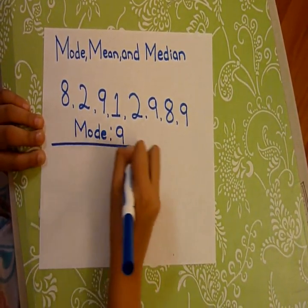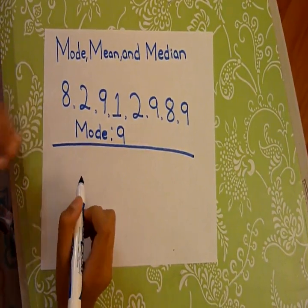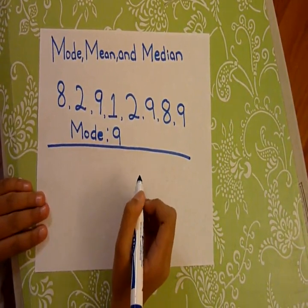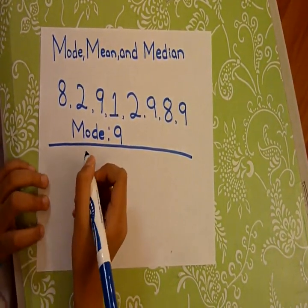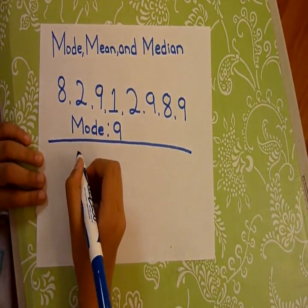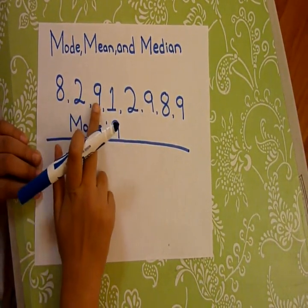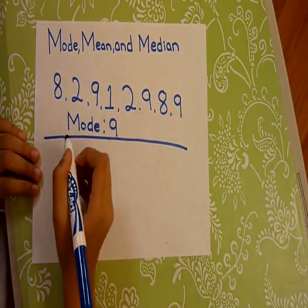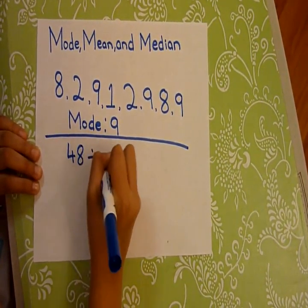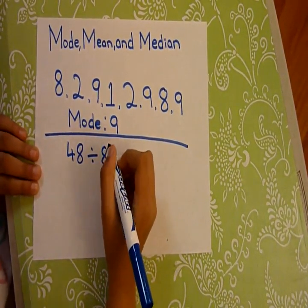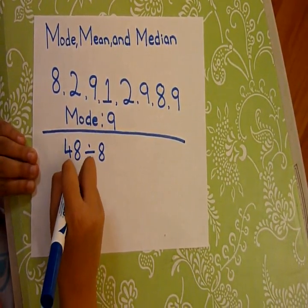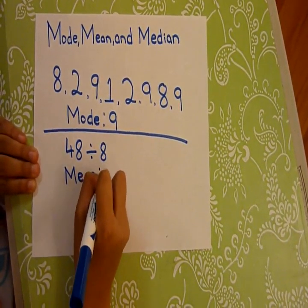Next we're going to do the mean. The mean is all the numbers added together divided by how many numbers there are. So all the numbers added together is 48. And how many numbers are there? One, two, three, four, five, six, seven, eight. So you have to do 48 divided by eight because there are eight numbers. And 48 divided by eight equals six, so our mean is six.